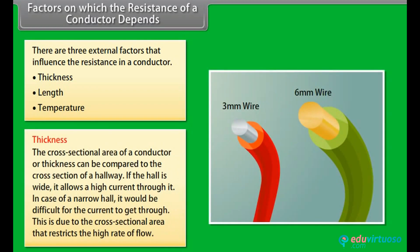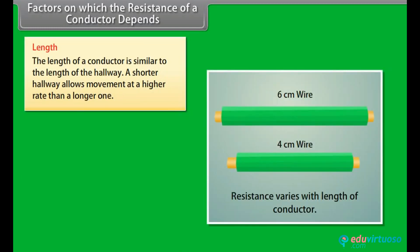The cross-sectional area of a conductor, or thickness, can be compared to the cross-section of a hallway. If the hall is wide, it allows a high current through it; if the hall is narrow, it would be difficult for the current to get through, due to the restricted cross-sectional area. Similarly, the length of a conductor is like the length of a hallway — a shorter hallway allows movement at a higher rate than a longer one.